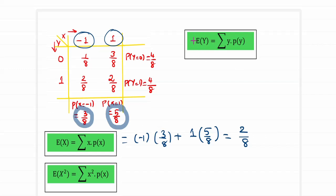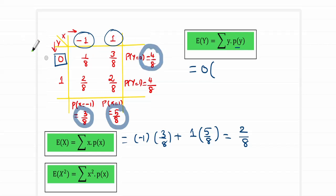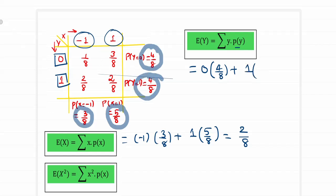For the mean of y, it is summation y into probability of y. The first value taken by y is 0, so it is 0 times 4 by 8. The second value is 1 times 4 by 8. The term with 0 vanishes, leaving E of Y equal to 4 by 8.